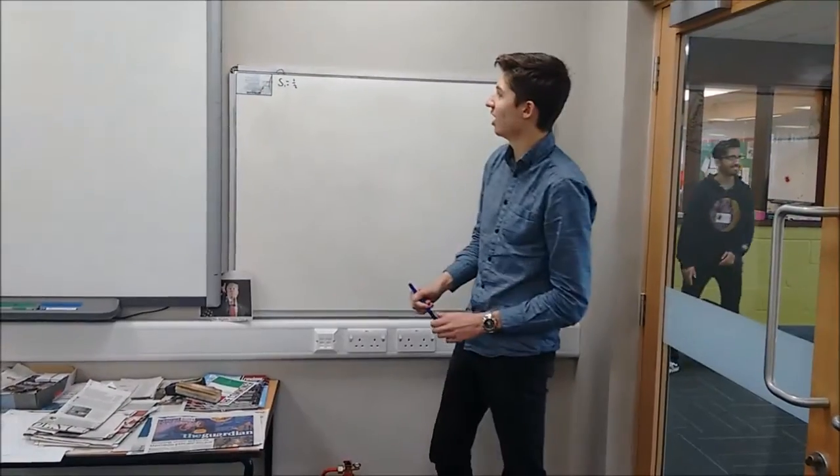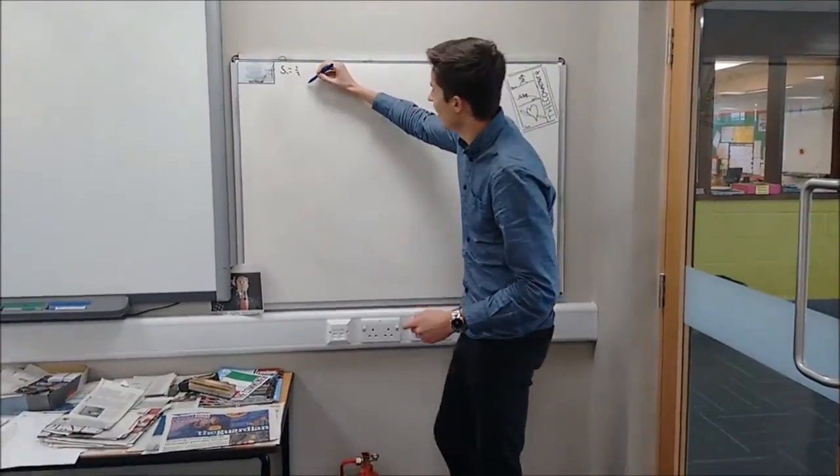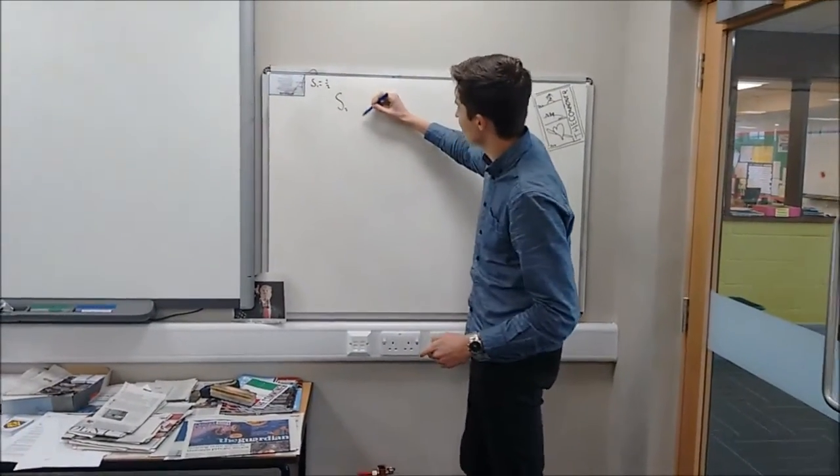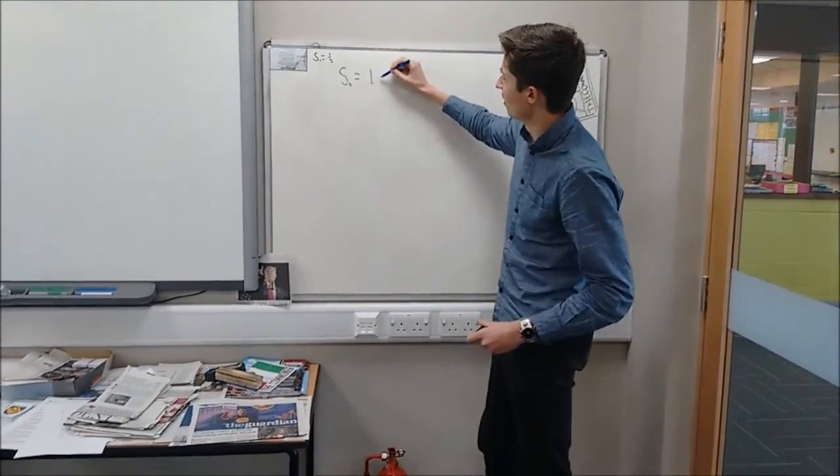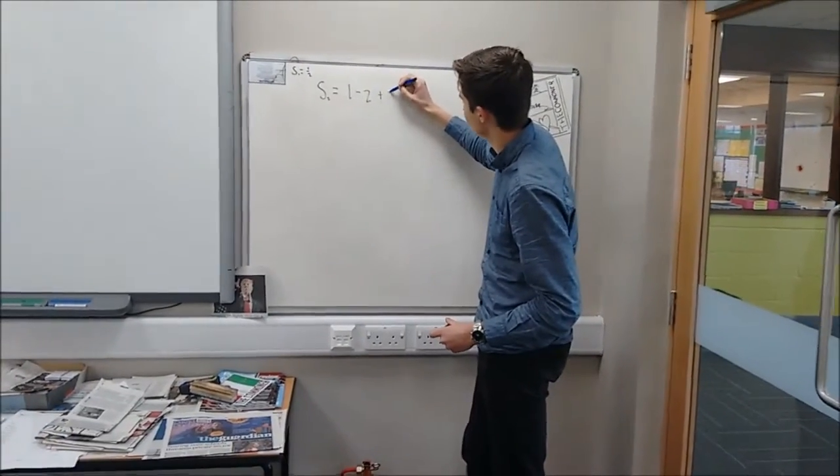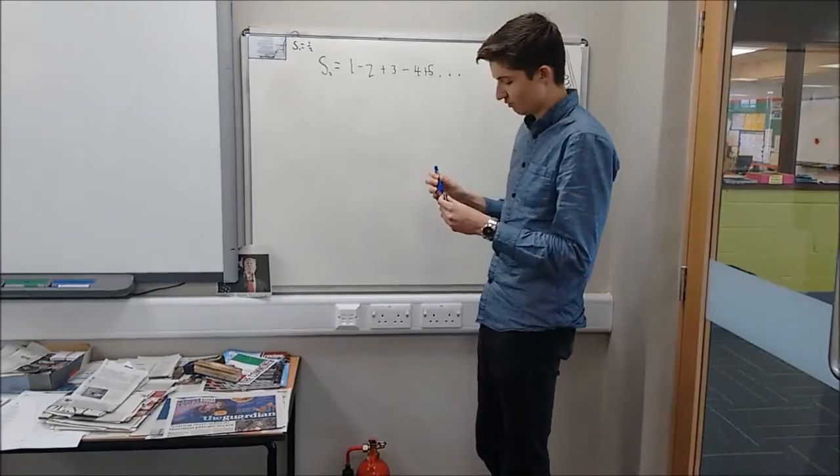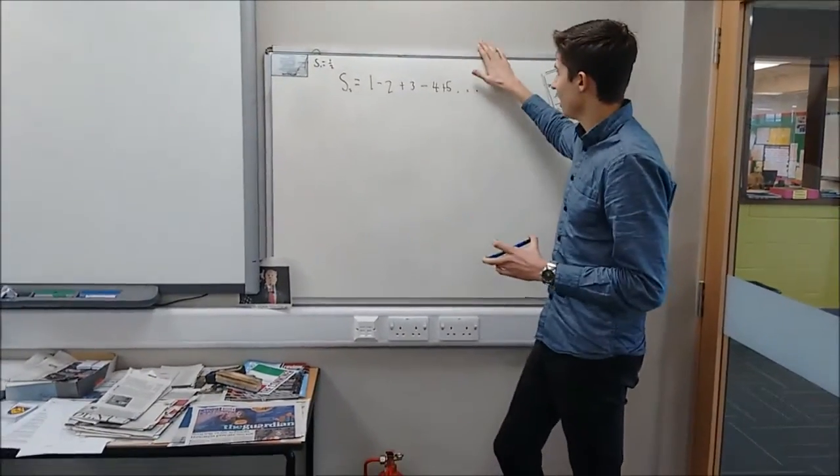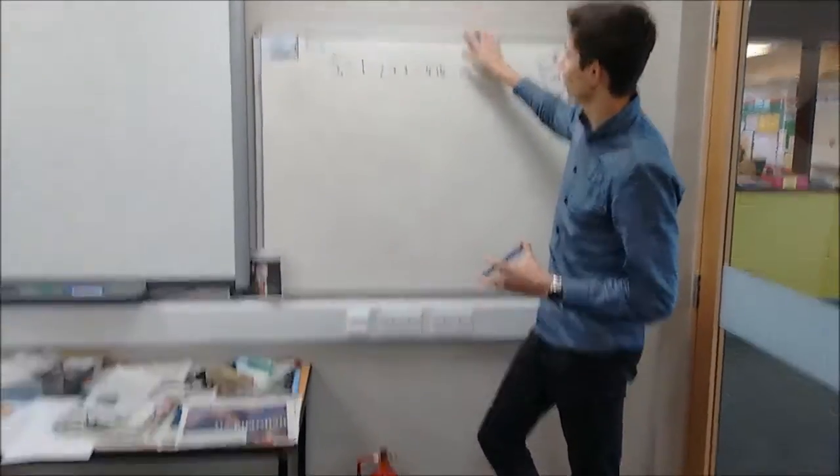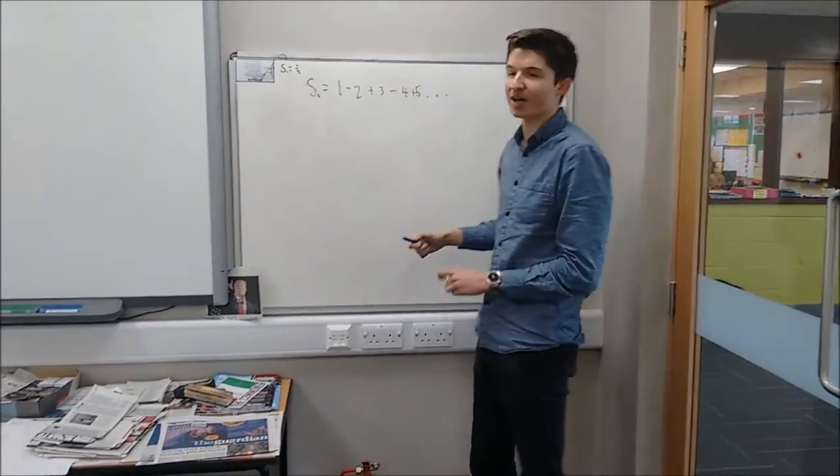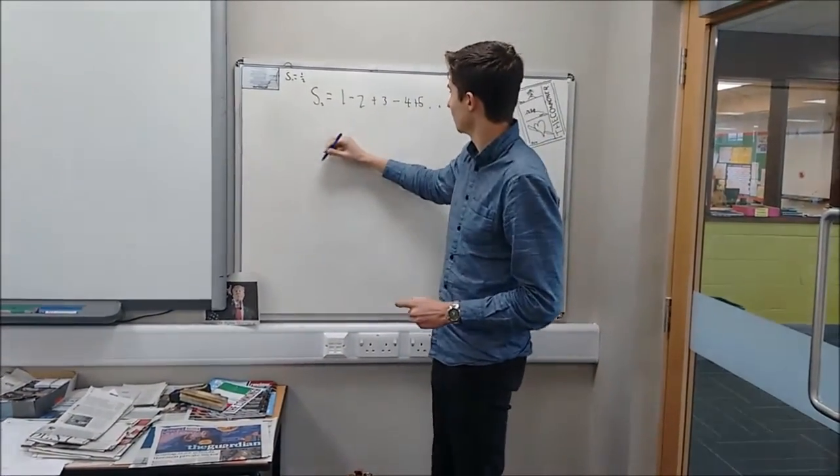S1 equals 1 half, we can start to work out another equation, S2. And that's going to be 1 minus 2 plus 3 minus 4 plus 5 to infinity. How are we going to work this out? Well, we're going to have to take it away. I think we can add it to itself, actually.